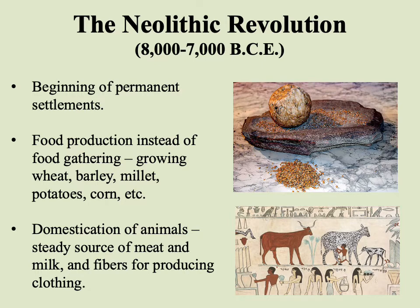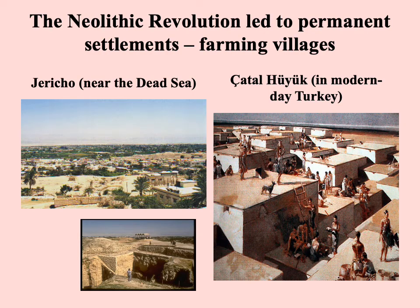The main development is food production instead of food gathering — you're now growing the principle basis of your diet. It varies by region: wheat, barley, millet in some areas; potatoes and corn in the Americas. Connected with farming or agriculture, we also find the domestication of animals, providing a steady source of meat, milk, and fibers for clothing. Between agriculture and animal domestication, it was no longer necessary to move around. Hunter-gatherers had to go where the food was, but now we see the beginning of permanent settlements.